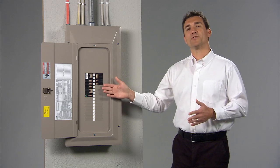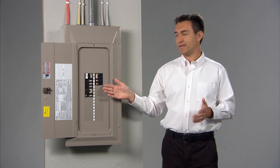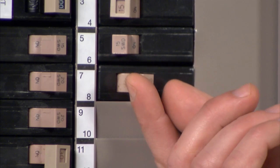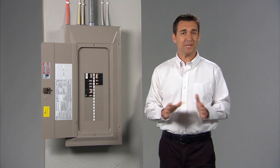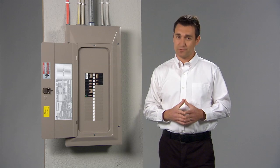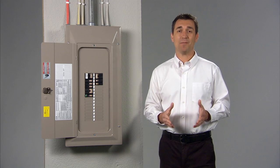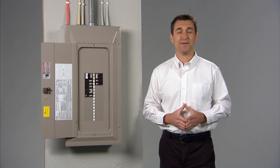If a circuit breaker trips, try to reset it by turning it to the off position and then back to the on position. Do this only once. This is important. Don't keep resetting a circuit breaker. If it trips again, it's trying to tell you there's a problem with that line and it needs to be fixed.